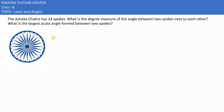The Ashoka Chakra has 24 spokes. What is the degree measure of the angle between 2 spokes next to each other?